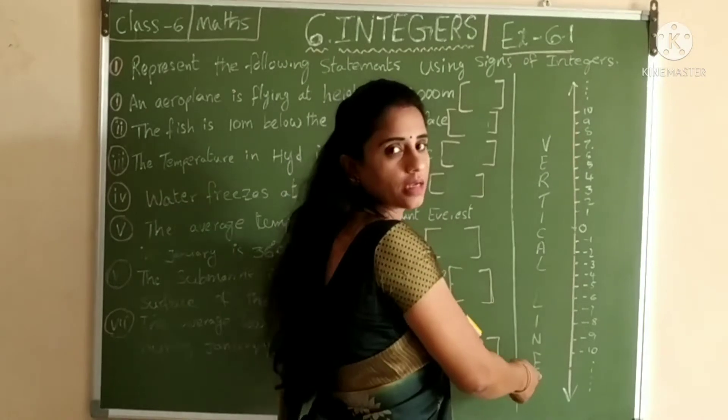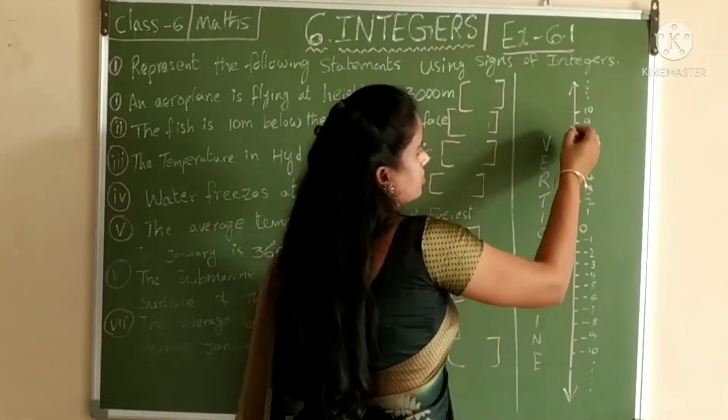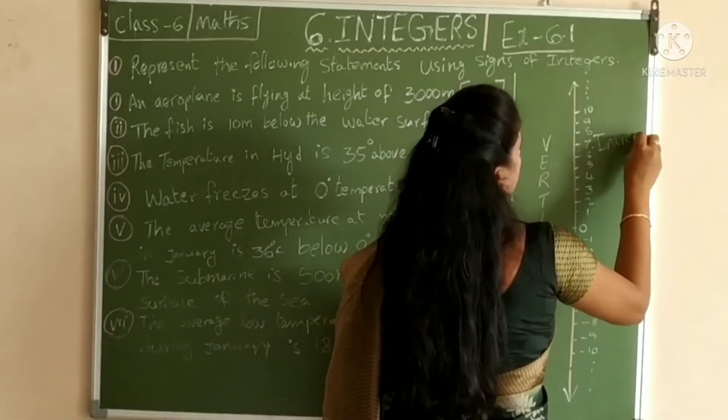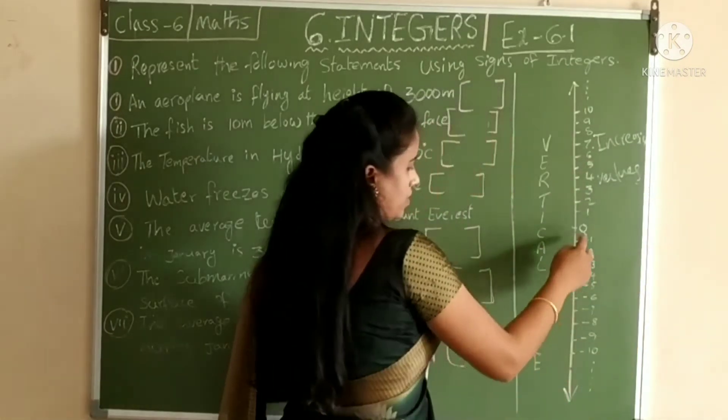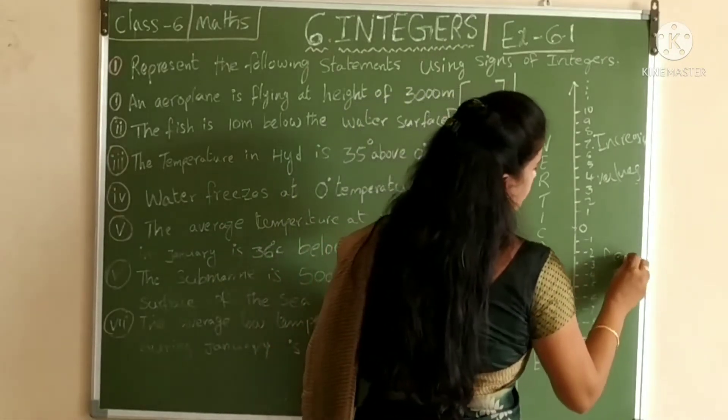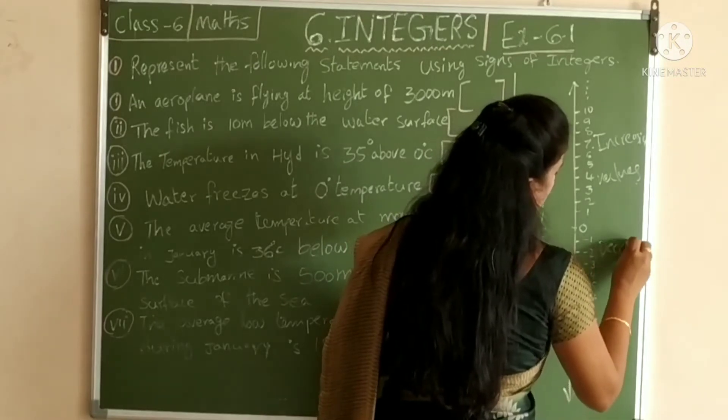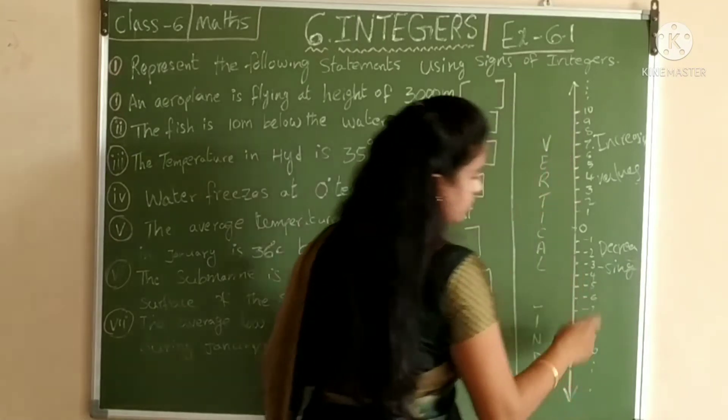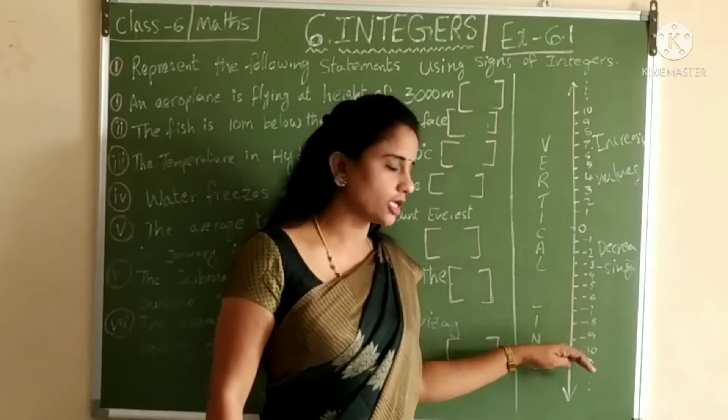The vertical line of integers. The values above 0 are increasing values. The values below 0 are decreasing values. Above 0 is increasing values, below 0 is decreasing values.